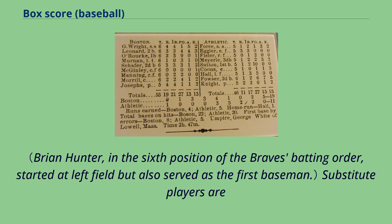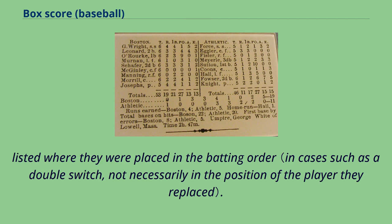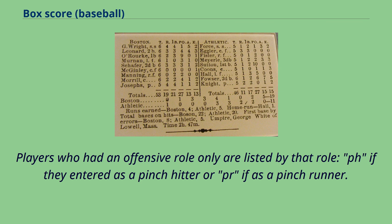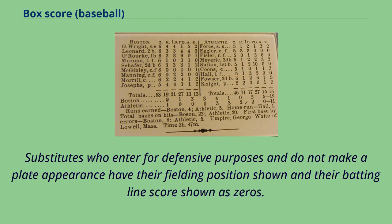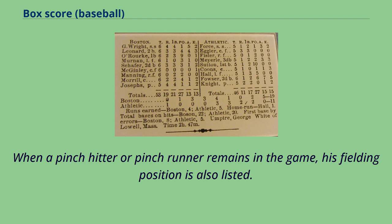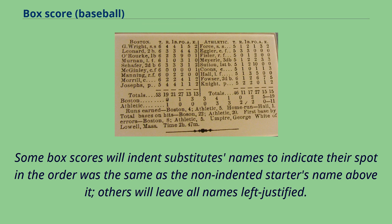Substitute players are listed where they were placed in the batting order. Players who had an offensive role only are listed by that role — PH if they entered as a pinch hitter or PR if as a pinch runner. Substitutes who enter for defensive purposes and do not make a plate appearance have their fielding position shown and their batting line score shown as zeros. When a pinch hitter or pinch runner remains in the game, his fielding position is also listed. Some box scores will indent substitutes' names to indicate their spot in the order, while others will leave all names left justified.